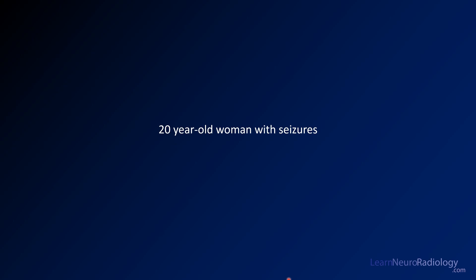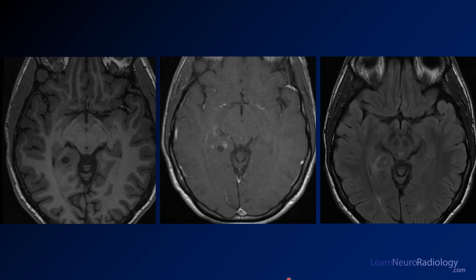Our next case is a 20-year-old woman with seizure — you see a developing trend; a lot of these patients have seizures. On the left, we have a pre-contrast T1-weighted image. In the posterior hippocampus and medial temporal lobe along the ventricle, you see a well-defined T1 hypointense lesion. On post-contrast imaging, there's not much enhancement in the cystic region, but some ill-defined enhancement and a few little patches of enhancement around it.